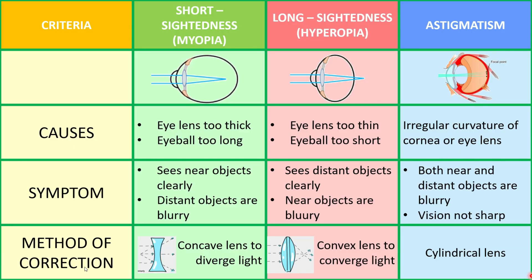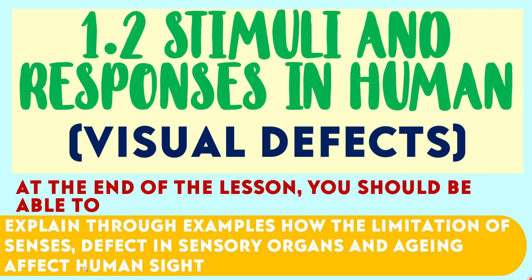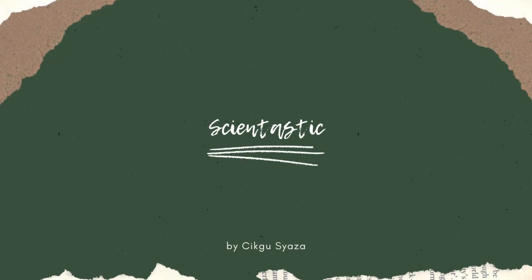So today, this is what you have learned: the three types of defects of sight and ways to correct them. As a conclusion, the names of the defects are actually the other way around in Bahasa Melayu. If it's short-sightedness, in Malay it will be Rabun Jauh. Meanwhile, for long-sightedness, in Bahasa Melayu it will be Rabun Dekat. That's all for today's lesson. I hope you can differentiate the three types of defects of vision. See you again in our next lesson. Thank you.